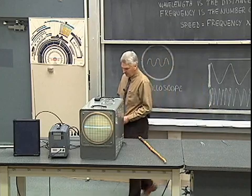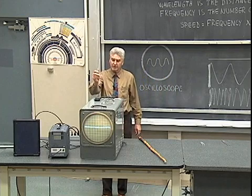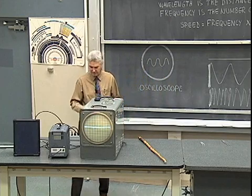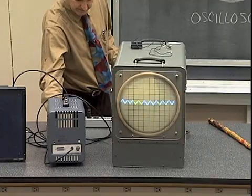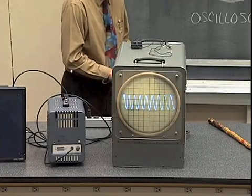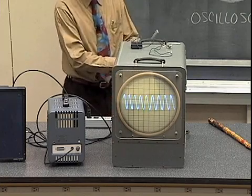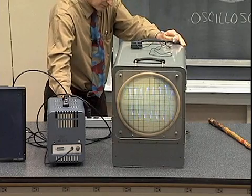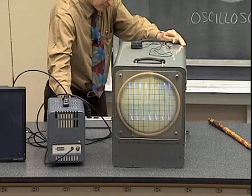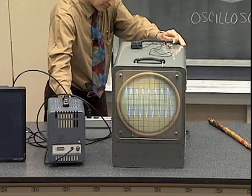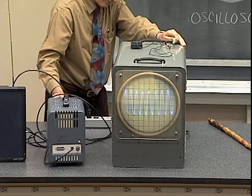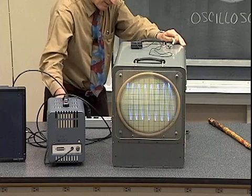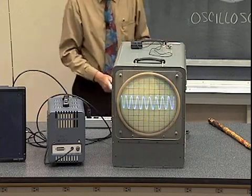You can watch the amplitude fluctuate on the oscilloscope. This is 512 cycles per second, and I'll try to bring in the audio generator at about that same frequency. Pretty close.